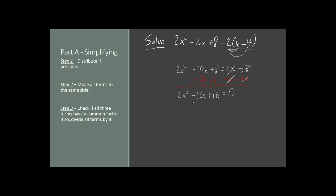Now we have 2x-squared — we didn't do any operations to it, so it is still 2x-squared. Negative 10x and negative 2x makes negative 12x. Positive 8 and positive 8 makes positive 16. Now that we have everything on the same side, let's simplify in step 3. If we have a common factor for all three terms, let's divide everything by that common factor. They are all even numbers, so we can divide every term by 2. The 2s in front of x-squared cancel out, giving us x-squared. Negative 12 divided by 2 gives us negative 6x. Positive 16 divided by 2 gives us positive 8. And it all still equals 0.